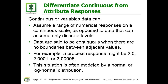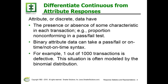As opposed to a situation where a transaction is satisfactory or it's not. For continuous responses, we can have different distributions — they could be normal or lognormal. Attribute or discrete data represents a presence or absence of some characteristic that makes a situation good or bad. We often represent this as a binomial distribution; we can only take a pass/fail or on-time/not-on-time type situation.